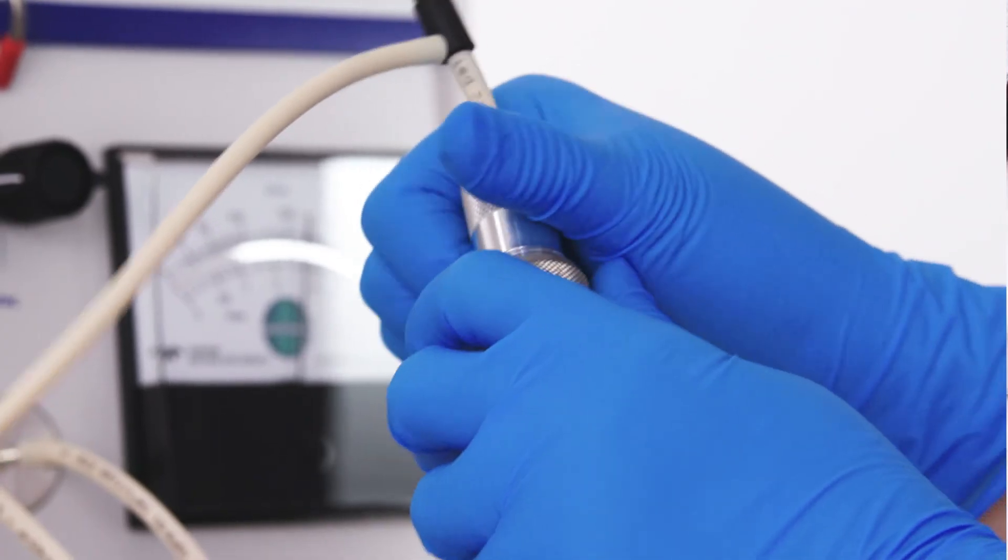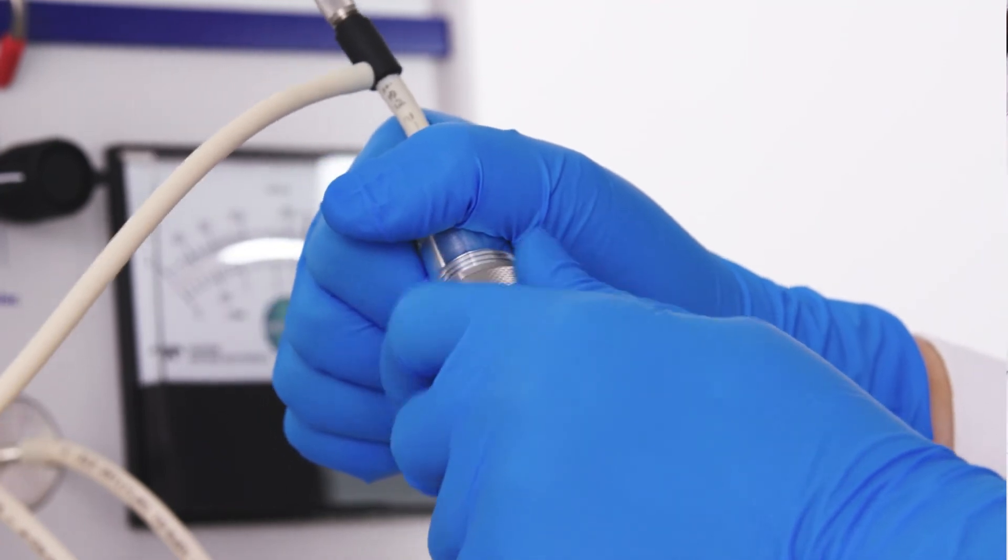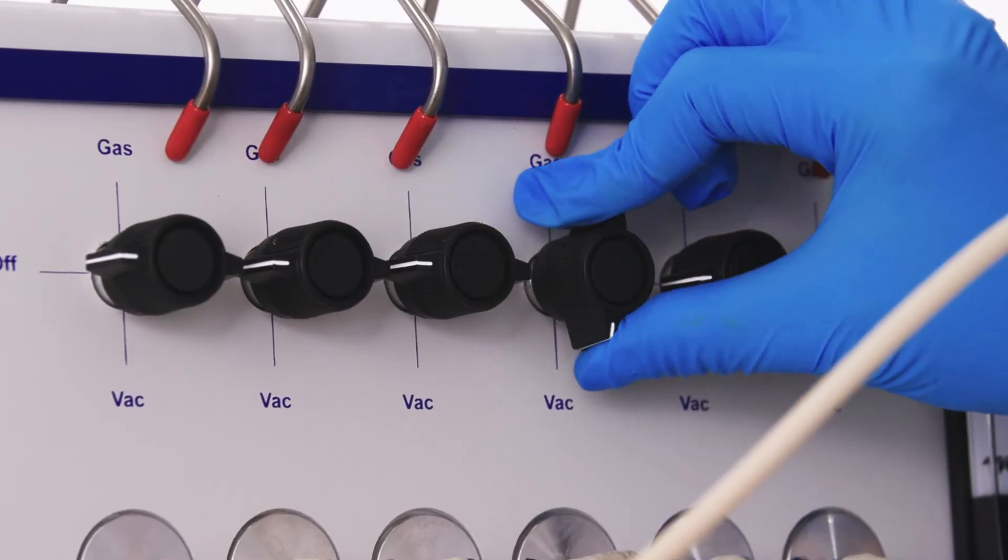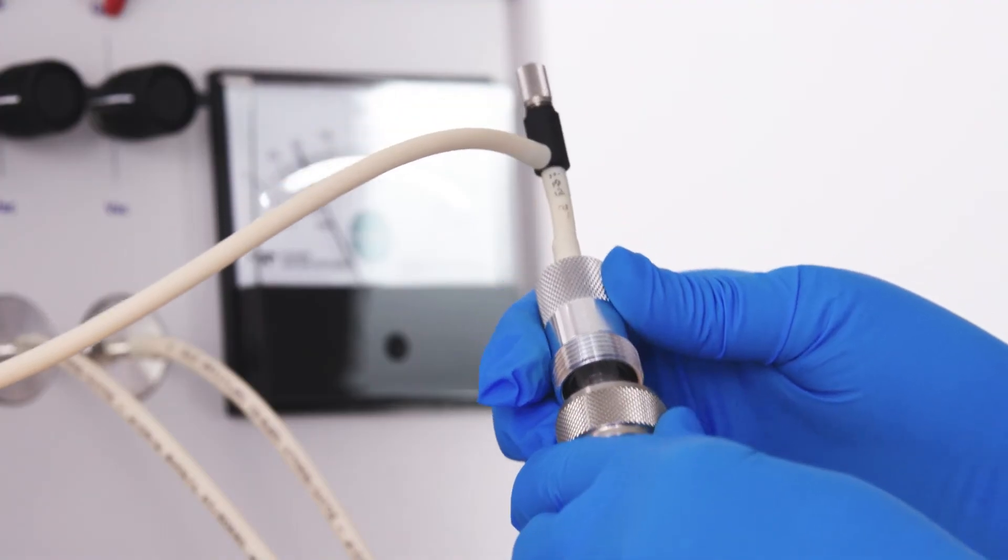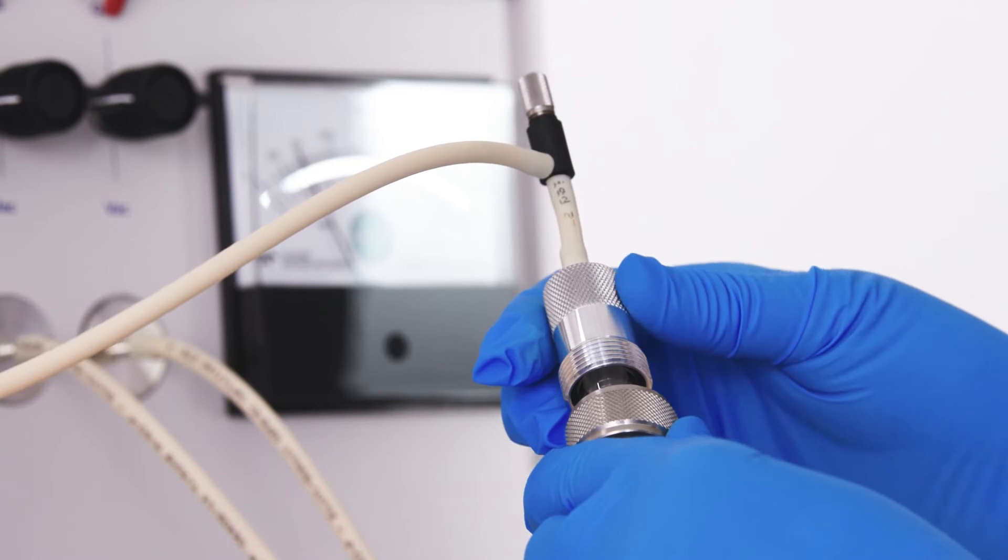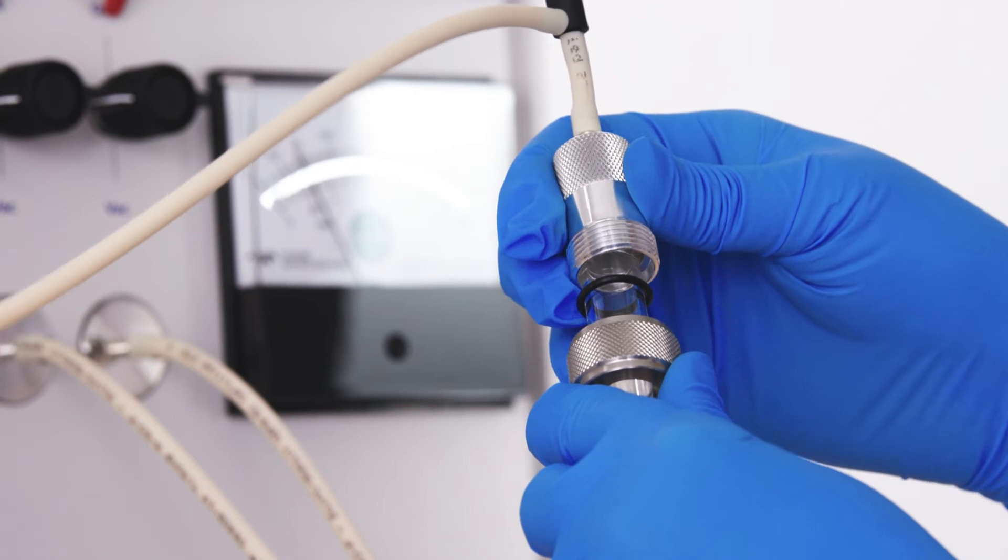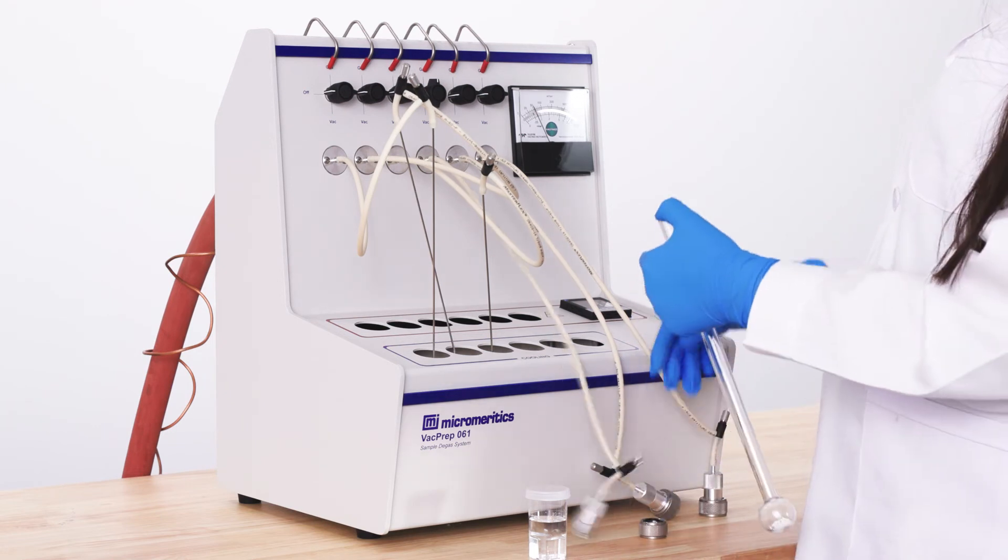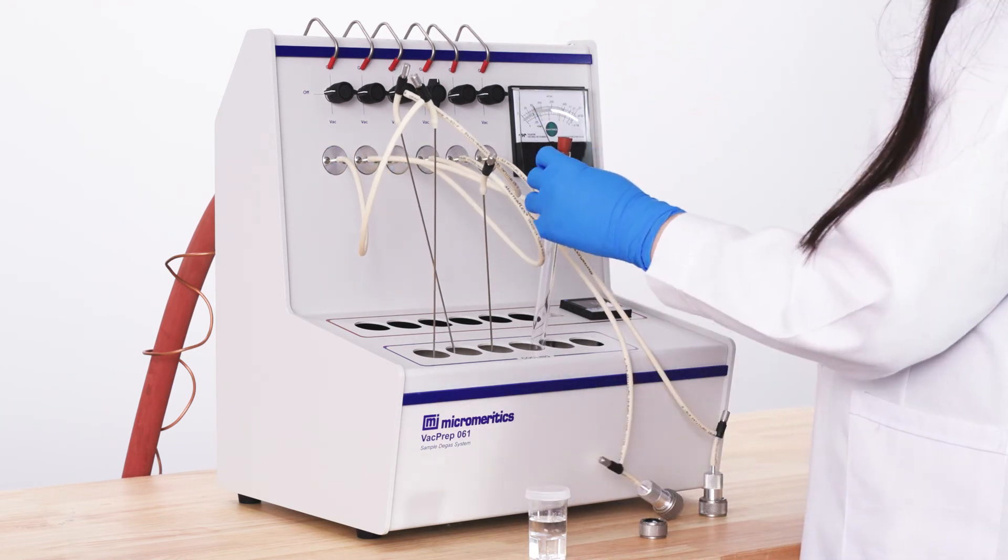To remove the sample tube mount, we recommend unscrewing the nut and then turning the knob on the instrument from vac to gas. The vacuum will be released and the assembly will pop off. Ensure to place the rubber stopper back on the sample tube. The sample is now ready to be weighed and mounted on your instrument.